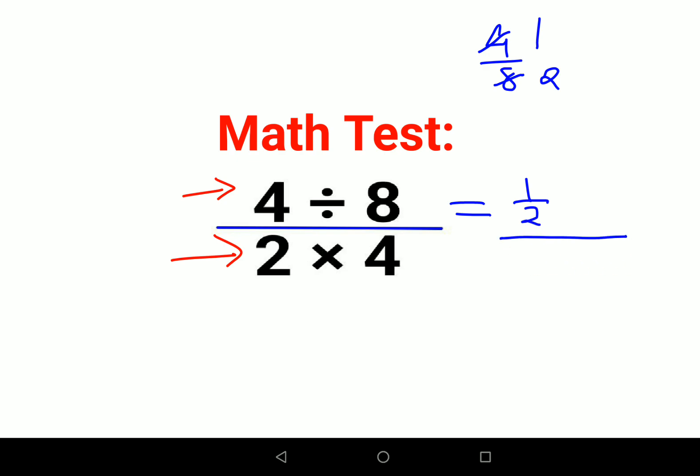Now here we have 2 into 4 that is 8. So basically what happened over here is you got this as 1 divided by 2 then divide by 8.